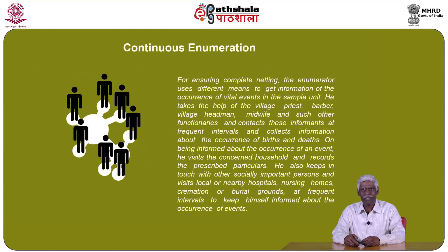For ensuring complete netting, the enumerator uses different means to get information about the occurrence of vital events in the sample unit. He takes the help of the village priest, barber, village headman, midwife and such other functionaries, contacting these informants at frequent intervals to collect information about the occurrence of births and deaths. On being informed about the occurrence of an event, he visits the concerned household and records the prescribed particulars. He also keeps in touch with other socially important persons and visits local or nearby hospitals, nursing homes, cremation or burial grounds at frequent intervals.